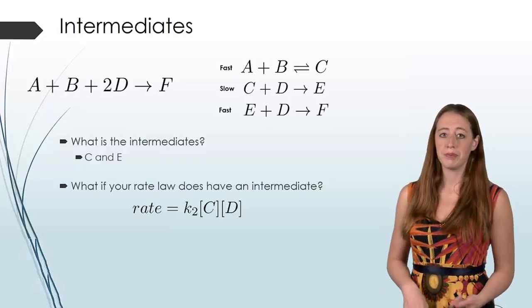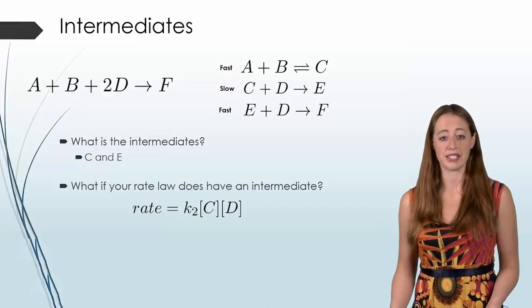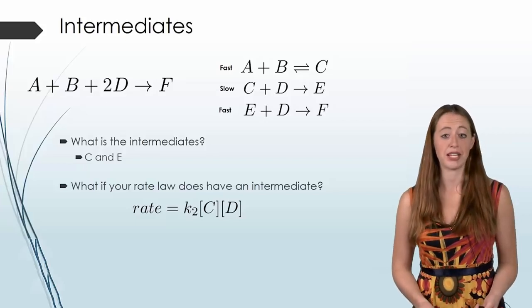But now we have a problem. Because in the last video and again in this one, I'm telling you you don't get to have intermediates in the rate law. And yet here, we have C. So we have to do something about that.